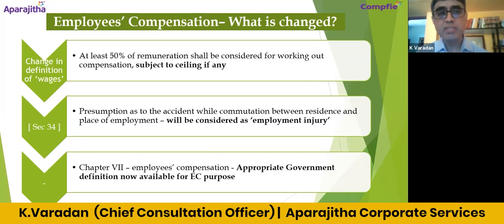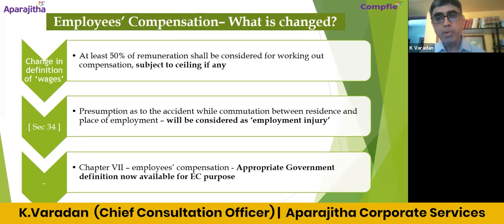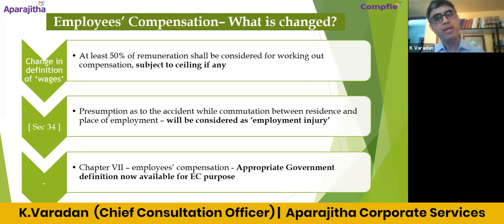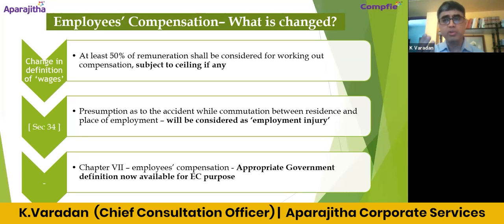Under Employees' Compensation, again at least 50% applies — the monthly gross wage will be treated as wages for the purpose of the Employees' Compensation Act (formerly the Workmen's Compensation Act). If the excluded components total 50%, the remaining 50% will be treated as wages. There is a ceiling for calculation — currently ₹15,000, raised from ₹8,000, effective January 2020.